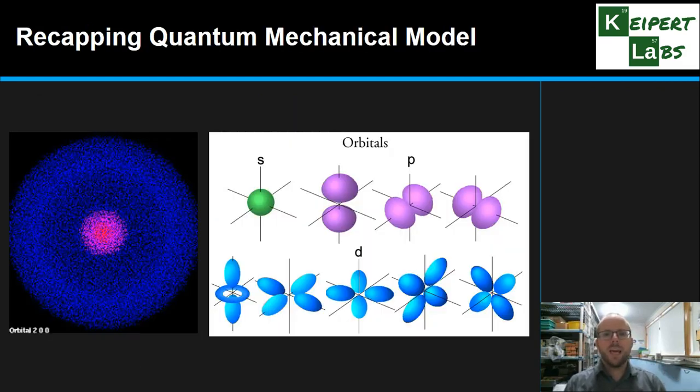So, thinking about the quantum mechanical model, also known as the electron cloud model. Remember that when Bohr pictured electrons orbiting around the nucleus like planets around the sun, with the introduction of quantum mechanics and quantum theory, we recognized that electrons orbiting is much more random and chaotic.